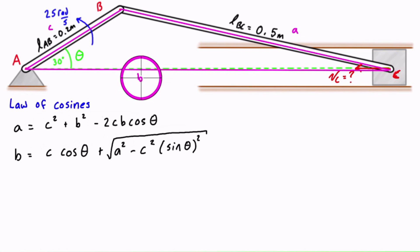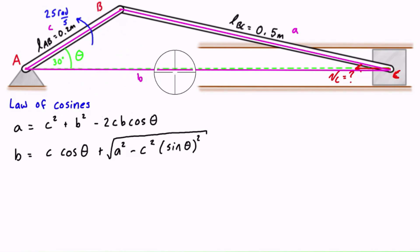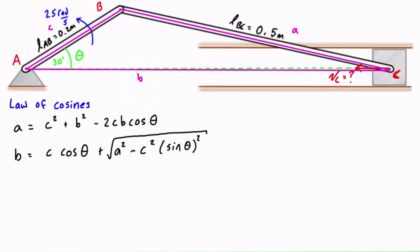Now, if the side you're looking at is aligned with the x-axis or y-axis, you might want to relabel it with the actual letter. So we can change side b here to x, and replace those labels with x as well, to make the next step more obvious.